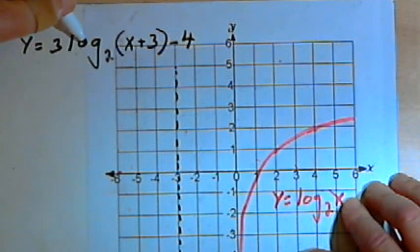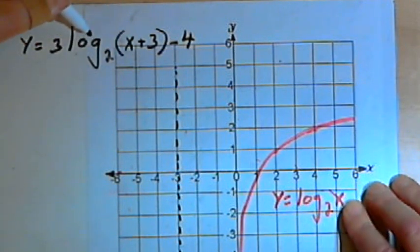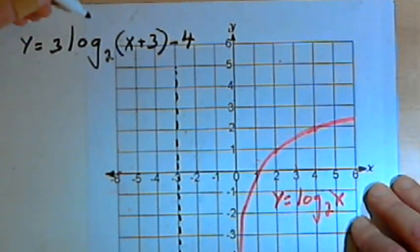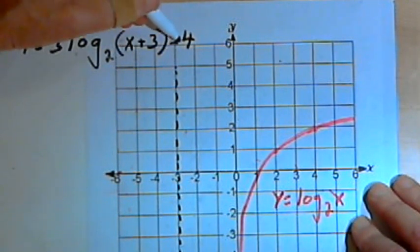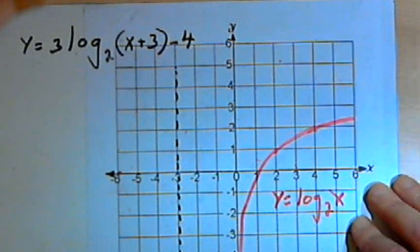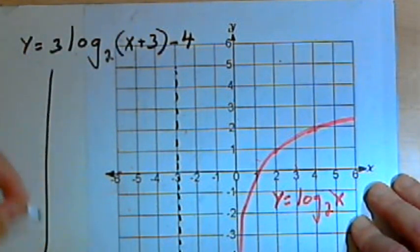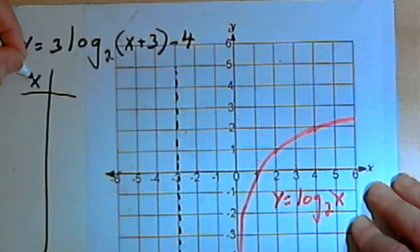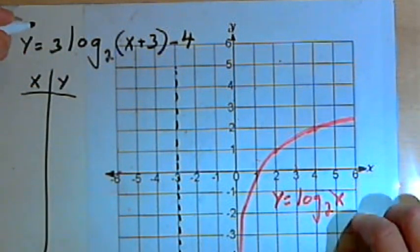The 3 in front of the logarithm is going to stretch everything out by a factor of 3. And the negative 4, after the logarithm, is going to drop everything down by 4 units. Okay, so let's make a table of values and find some points on this graph.